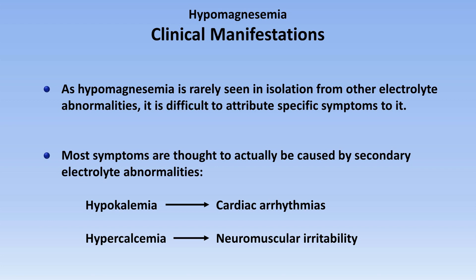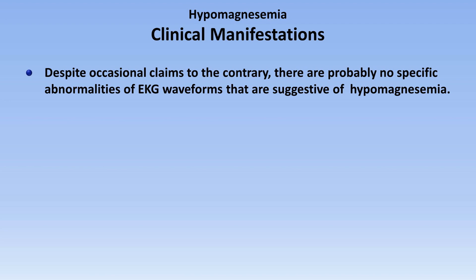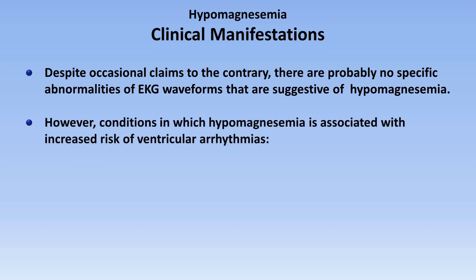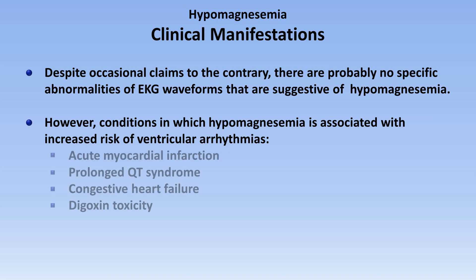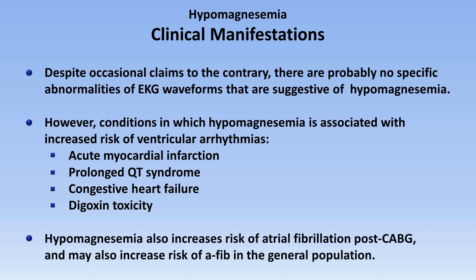Whether hypomagnesemia in isolation can cause these problems as well is actually not entirely clear. In addition, there are some epidemiological studies that suggest a link between chronic hypomagnesemia and both hypertension and coronary artery disease, though a causal relationship has not yet been clearly established. Despite occasional claims to the contrary, there are probably no specific abnormalities of the waveforms on the EKG that are specifically suggestive of hypomagnesemia. However, there are conditions in which hypomagnesemia is associated with an increased risk of ventricular arrhythmias. These include acute myocardial infarction, prolonged QT syndrome, congestive heart failure, and digoxin toxicity. Hypomagnesemia also increases the risk of AFib following bypass surgery and may also increase the risk of AFib in the general population.